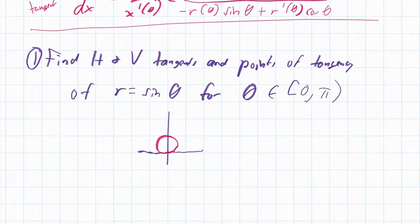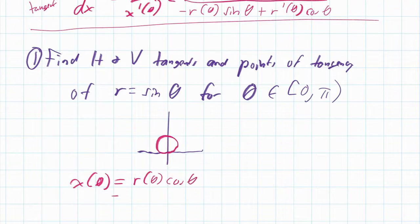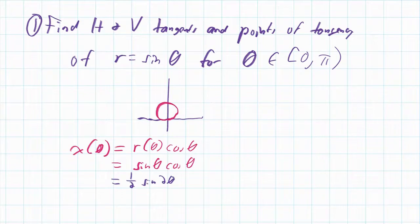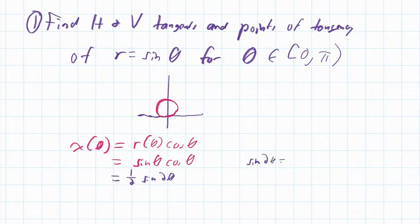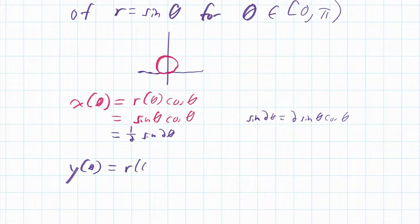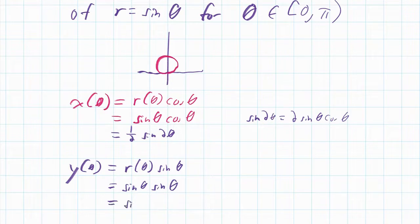We get x(θ) = r(θ)·cos(θ) = sin(θ)·cos(θ), which by the double-angle identity equals (1/2)sin(2θ), since sin(2θ) = 2sin(θ)cos(θ). Then y(θ) = r(θ)·sin(θ) = sin(θ)·sin(θ) = sin²(θ).